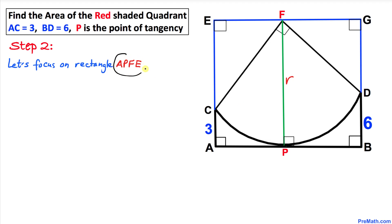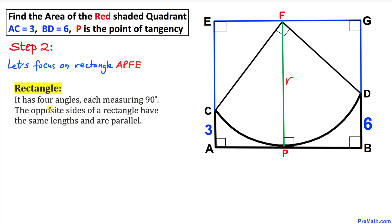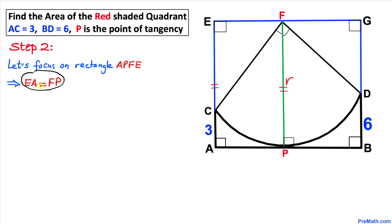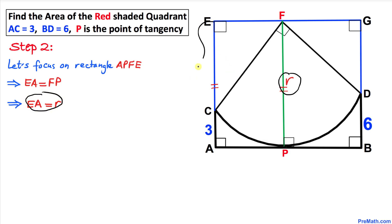Now let's focus on rectangle APFE. By the definition of a rectangle, it has four 90-degree angles and opposite sides of equal length that are parallel. Therefore side FP equals side EA, and since FP is radius r, this means EA equals r.